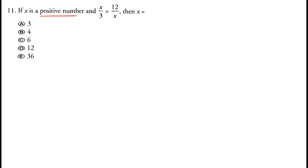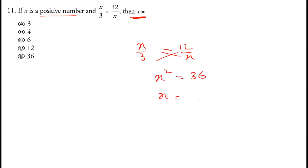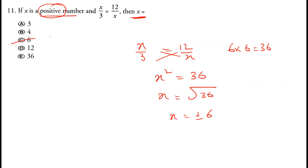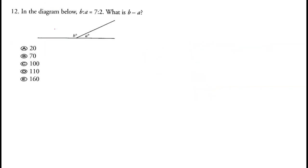If x is a positive number and x over 3 equals 12 over x, cross-multiplying gives x squared equals 36. So x equals the square root of 36, which is plus or minus 6. Since the number is positive, x equals 6. Option C is correct.